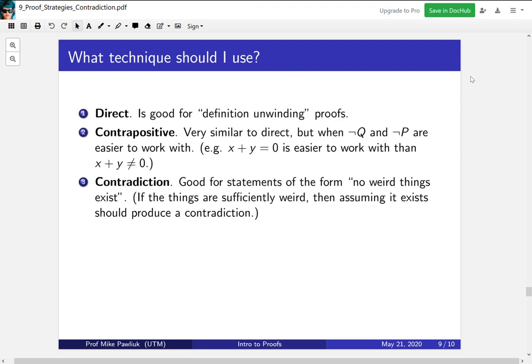A contrapositive proof is very similar to the direct proof, but it's used when not Q and not P are easier to work with. What do I mean by this? Well, x plus y equals zero is much easier to work with than x plus y not equal to zero. We'd rather work with the first statement. Equality is easier to work with than inequality.